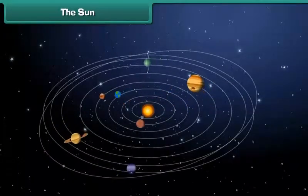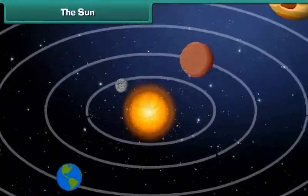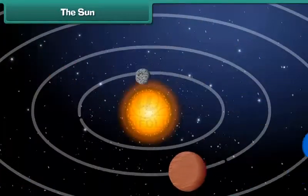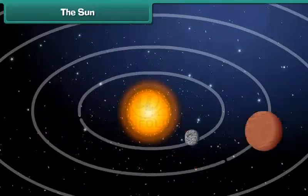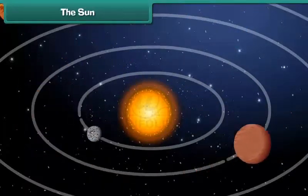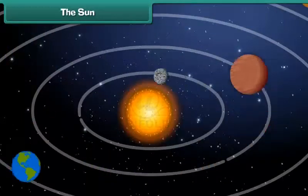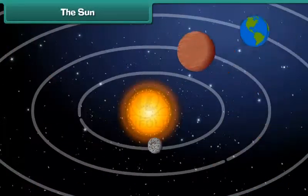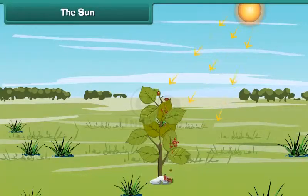There are many stars in the sky. Do you know that our Sun is also a star? Due to the presence of many hot gases burning together, the Sun looks like a big ball of fire. The Sun gives us heat and light, which is necessary for us to survive on Earth. Sunlight and heat are also necessary for plants to grow and live.